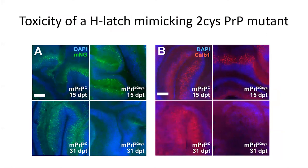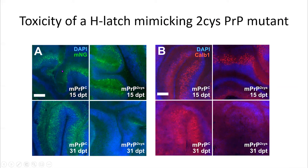The question is how does this work. Our interpretation is that the H-latch drives toxicity. To test this, we made a mutant of the prion protein with two cysteine substitutions that mimic the H-latch induced by POM1 — a prion protein that spontaneously adopts the conformation of the POM1-bound state. This was put into an AAV vector. Expressing the wild-type prion protein shows beautiful expression in the cerebellum at 15 days and still at 31 days, but the two-cysteine mutant shows nice expression at 15 days and then everything is gone at 31 days.